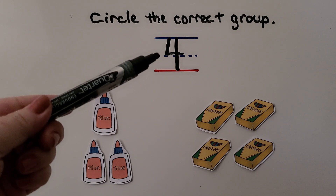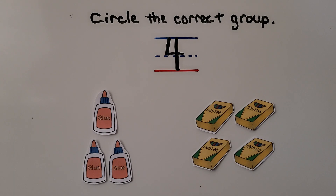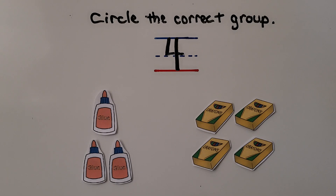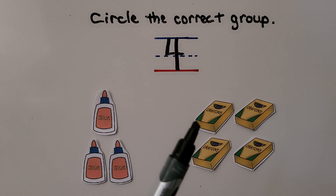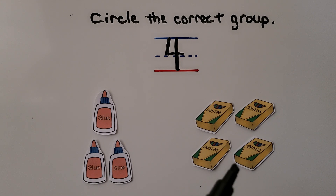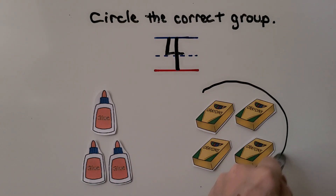Here we have the number 4 — we need to circle the correct group. Are there 4 bottles of glue, or are there 4 boxes of crayons? Can you count them? Let's count the glue: 1, 2, 3 bottles of glue. And 1, 2, 3, 4 boxes of crayons. If you said there are 4 boxes of crayons and that's the correct group, you're right.